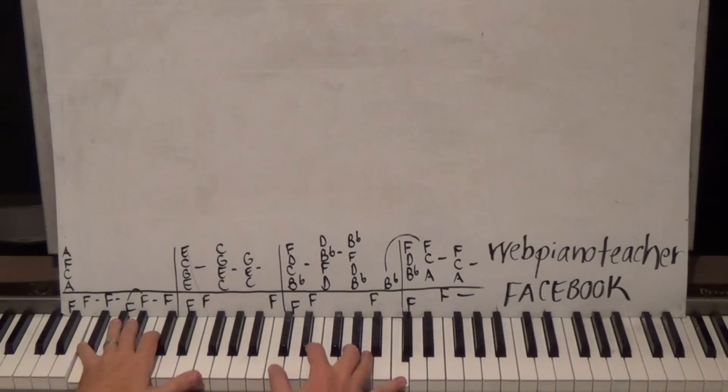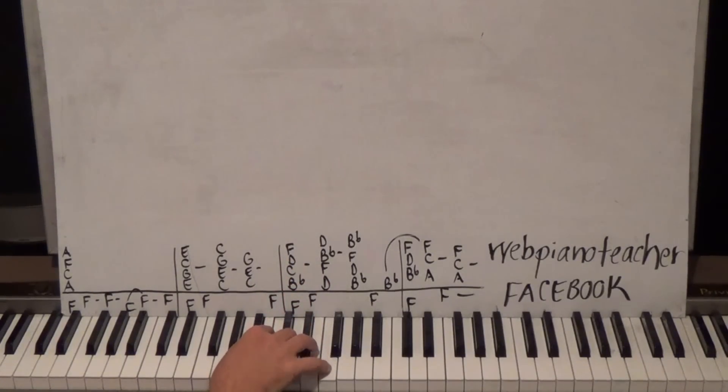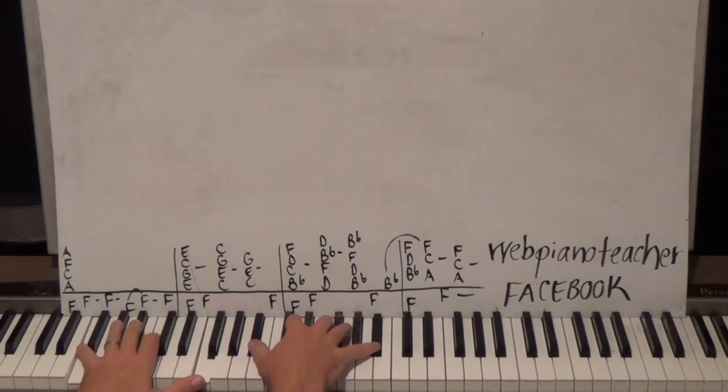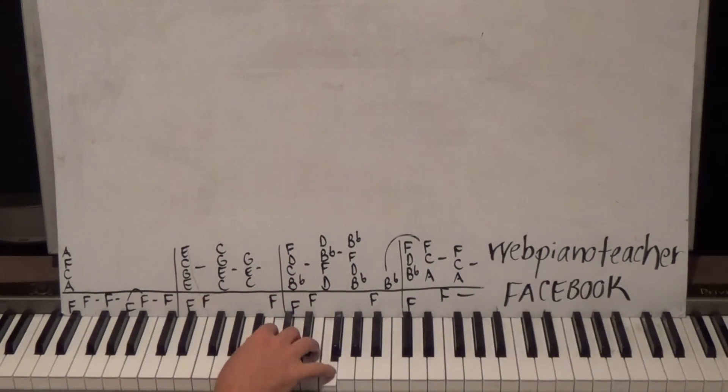Then I'm going to go B flat C D F. So B flat C D F with one, two, three, five. Now whenever your thumb is on a black key, you want to scoot up in between the keys a little bit.